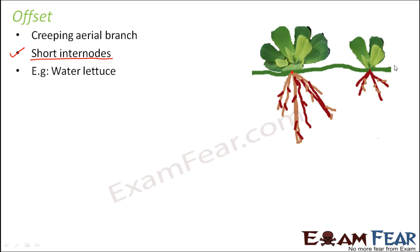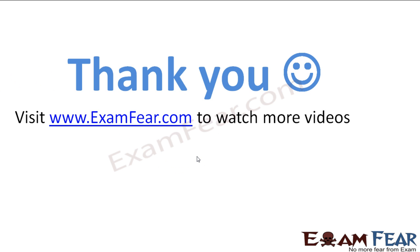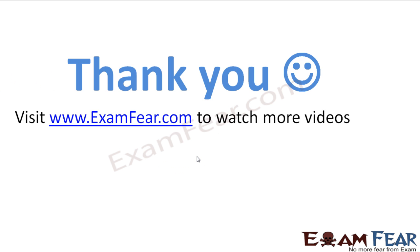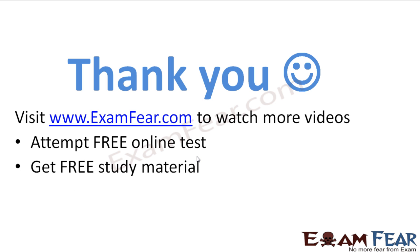Offset is also seen in other plants like Eichornia or Pistia, which are mostly aquatic plants. So these were the four different types of creepers or sub-aerial stems. We discussed the modifications of aerial stems and sub-aerial stems. Please visit examfear.com to watch more videos, attempt free online tests, get free study material, and find tutors and mentors. Thank you.